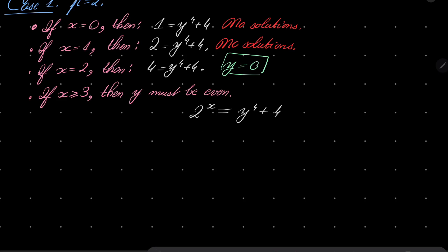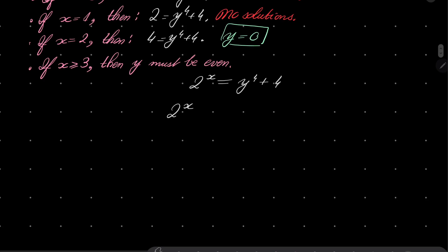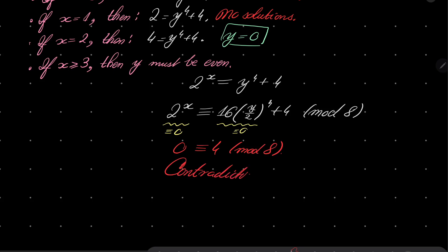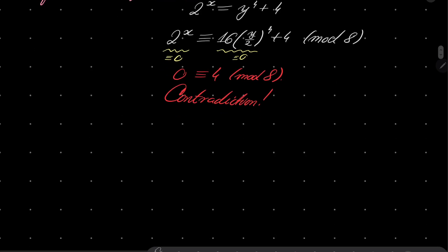All right, and let's do a reduction modulo 8. We have 2^x is congruent to 16(y/2)^4 + 4 modulo 8. And now we have a problem, because this number is congruent to 0, because x is greater than or equal 3. This is also congruent to 0, and we get 0 ≡ 4 (mod 8), which is contradiction. It's completely impossible. So we have closed the first case where p was equal 2.